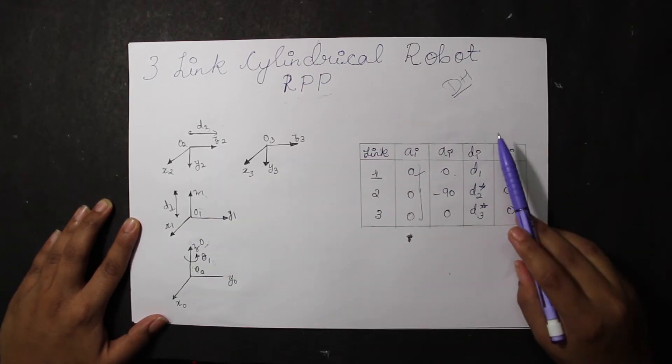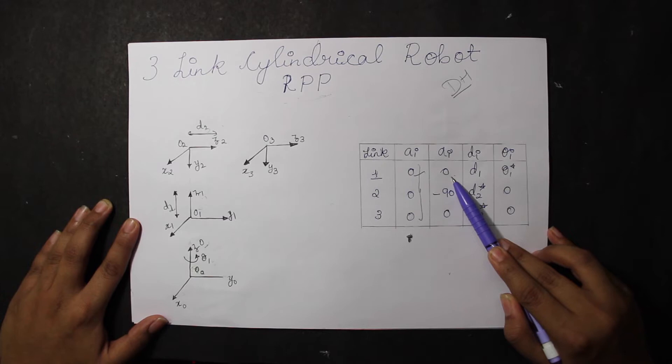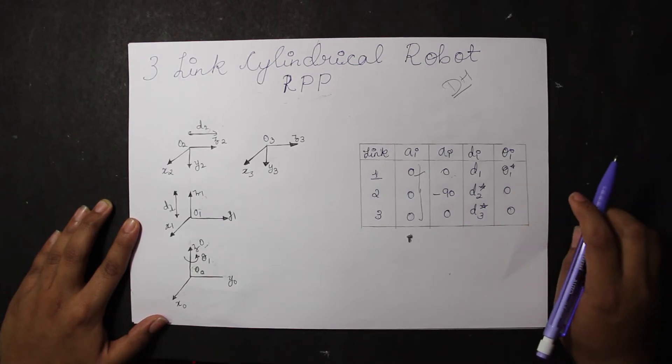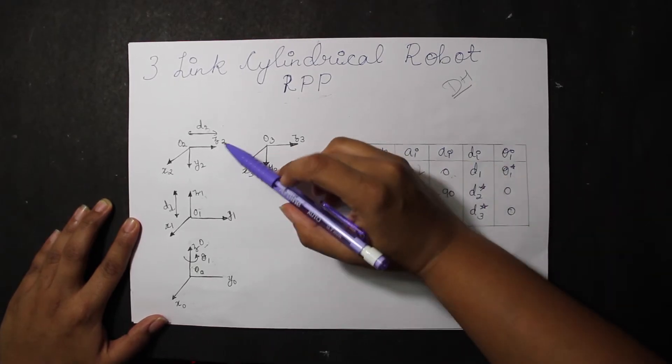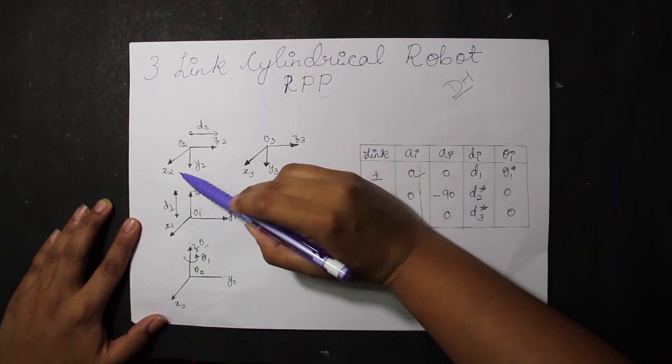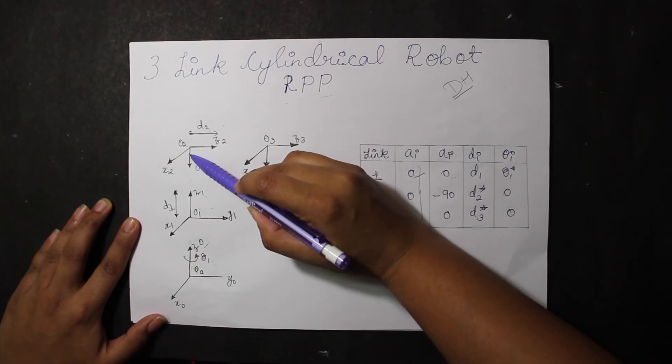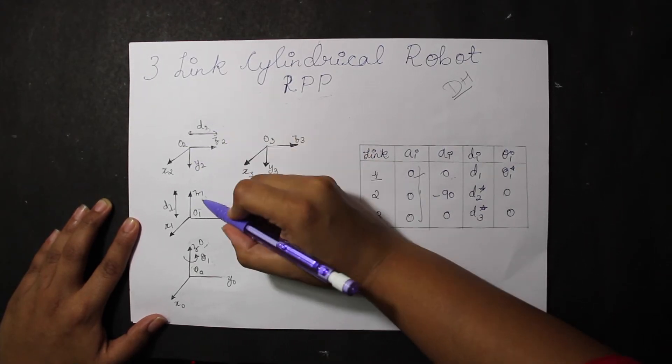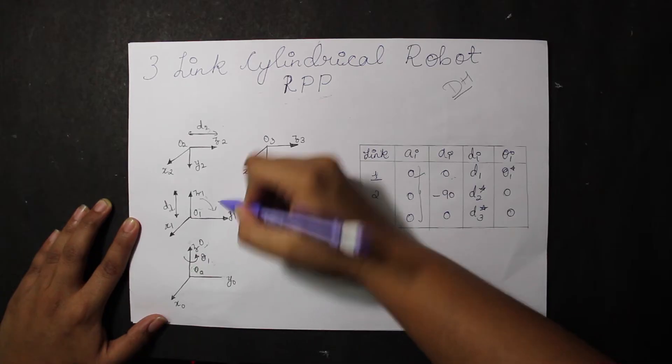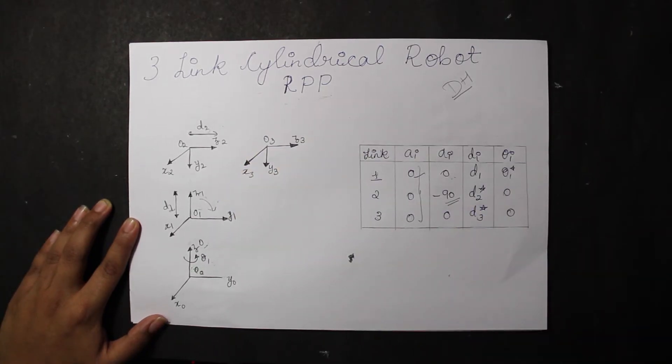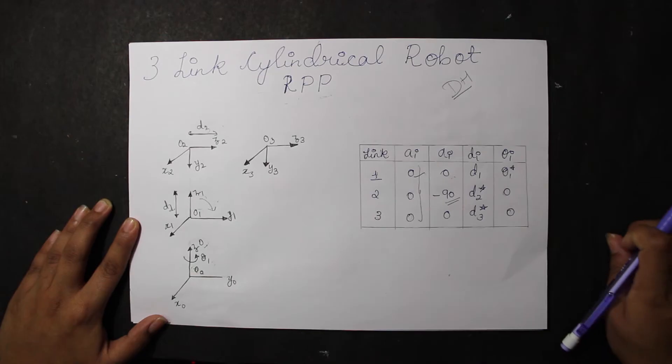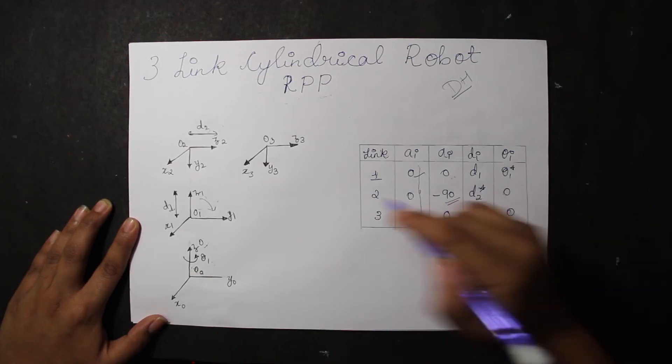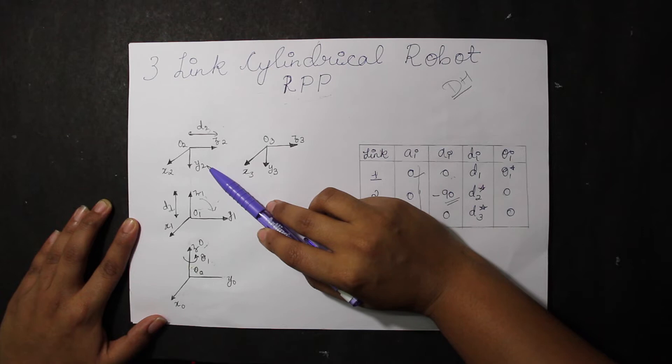When we look at frame 3 with respect to frame 2, we see that there has been a rotation since z2 has rotated minus 90 degrees because it has rotated in the clockwise direction with respect to x. That's why our alpha I, that is alpha 2, will be minus 90 degrees. Similarly, the fourth frame with respect to the third frame is not rotated, and that's why our alpha 3 will be 0.